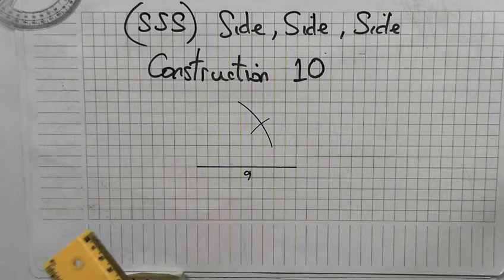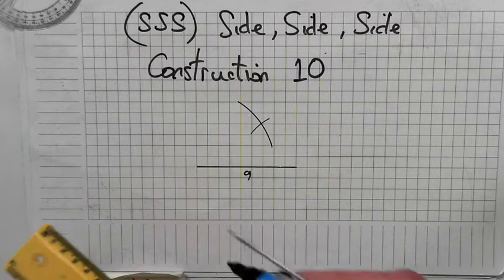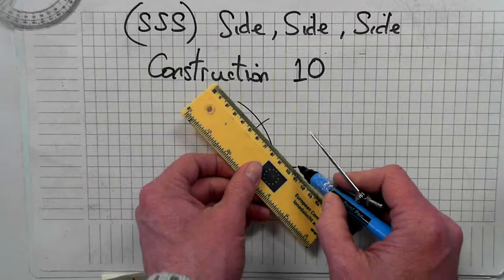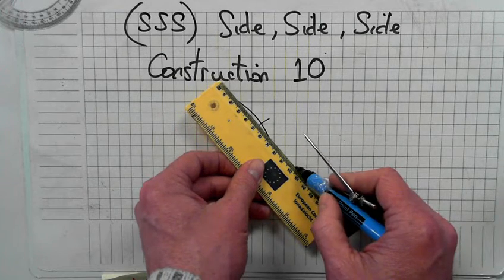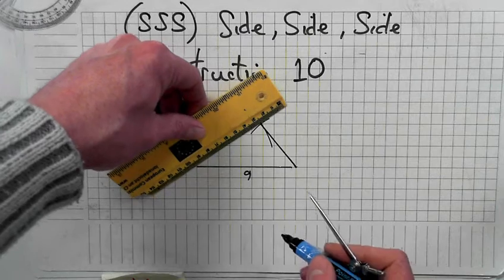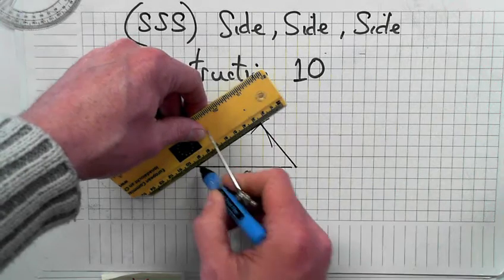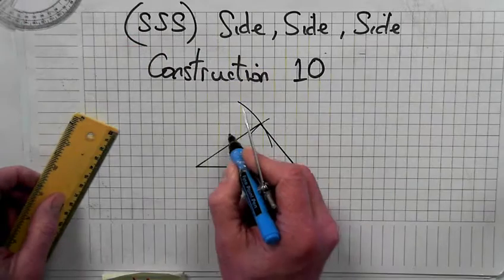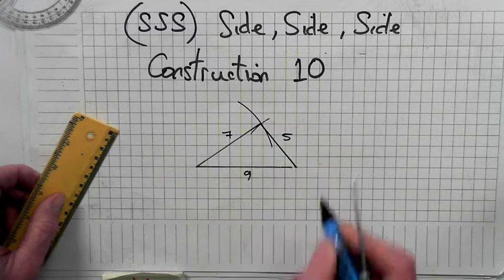So that should be a construction line using a pencil. And then use a ruler and a heavier pen. So that's nine. That was seven. That was five.